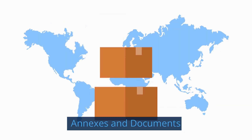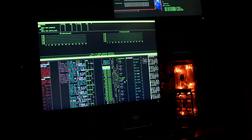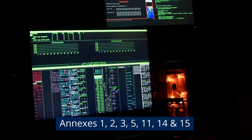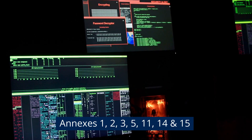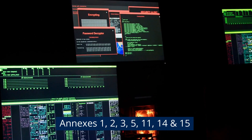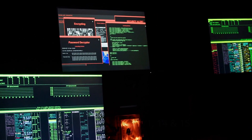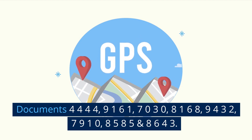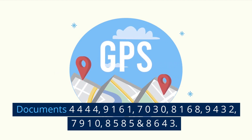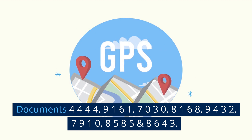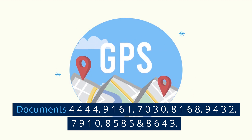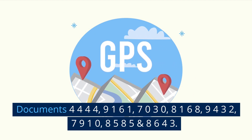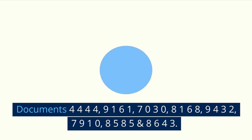Local aerodrome charts and maps. Annexes 1, 2, 3, 5, 11, 14 and 15. Documents: 4444, 9161, 7030, 8168, 9432, 7910, 8585 and 8643.